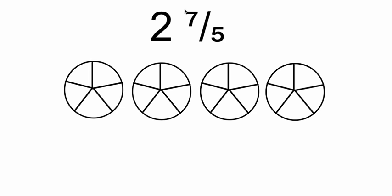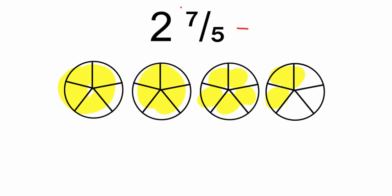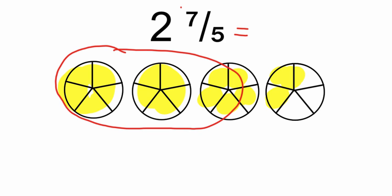On this page we have a whole number and an improper fraction. So two and seven-fifths — let's shade and see what that looks like: two and one, two, three, four, five, six, seven out of five. I want to change this into a mixed number with a proper fraction. Basically, we have three wholes and two out of five. So two and seven-fifths is the same as three and two-fifths — we've just gone the opposite way.